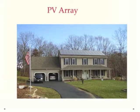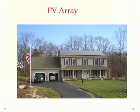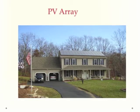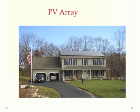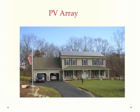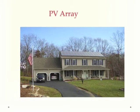PV panels are joined together to form a PV array. A PV array, like the one on the roof of a residence, would be rated by the amount of power the whole array could produce. A typical residential array might produce 5 kilowatts of power under strong or full sunlight conditions.